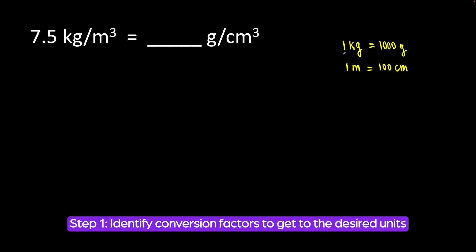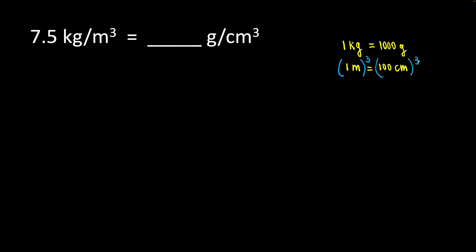We are going to use these conversion factors. One kilogram is equal to 1,000 grams. One meter is equal to 100 centimeters. But we need cubic units, so we are going to cube both sides in order to get cubic units.